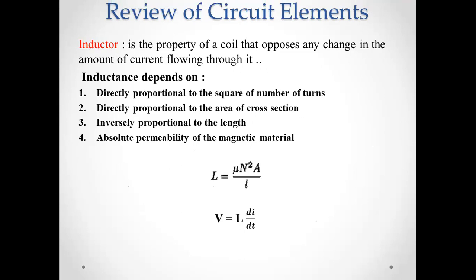An inductor is the property of the coil — the coil that opposes any change in the amount of current flowing through it. If we have a uniform current flow, we don't observe inductance. If we have a varying current flow, we observe inductance. You will learn two types: self-induction and mutual induction.